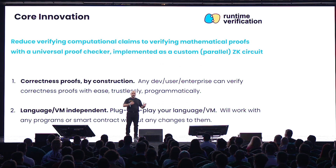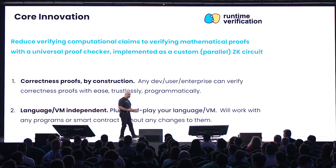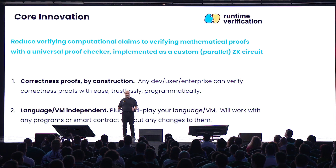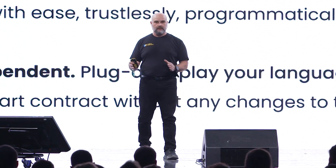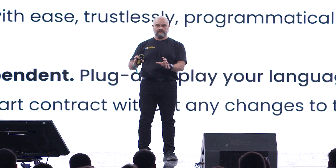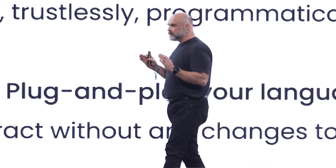So we reduce computing to mathematics, and the mathematical proofs will be verified using a universal proof checker implemented as a custom, ultra-fast, zero-knowledge circuit. The motto here is: verify mathematics, and you can verify everything. This is what allows correct-by-construction execution of programs — because it goes through mathematics, proved correct, and then deployed. It works with all programming languages and all virtual machines, simply because they will be mathematical theories.